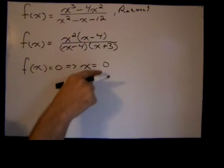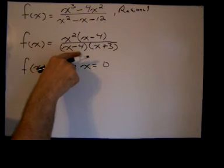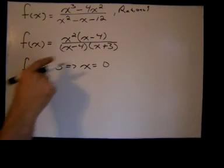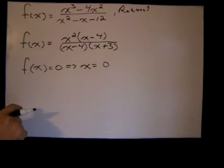The value x equals 4, that factor is also in the denominator making the function undefined not equal to zero. So even though x minus 4 is in the numerator, it does not make the function equal to zero.